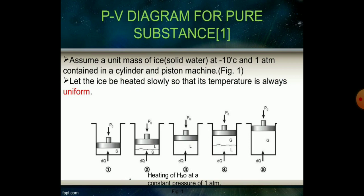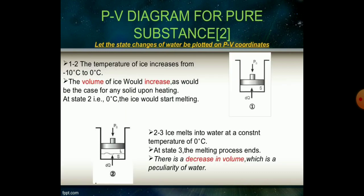Assume a unit mass of ice — solid water — at minus 10 degrees Celsius and one atmosphere of constant pressure in a cylinder-piston machine. The ice is heated slowly so its temperature is always uniform. The temperature of ice increases from minus 10°C to 0°C, and the volume of ice increases, as would be the case for any solid being heated.